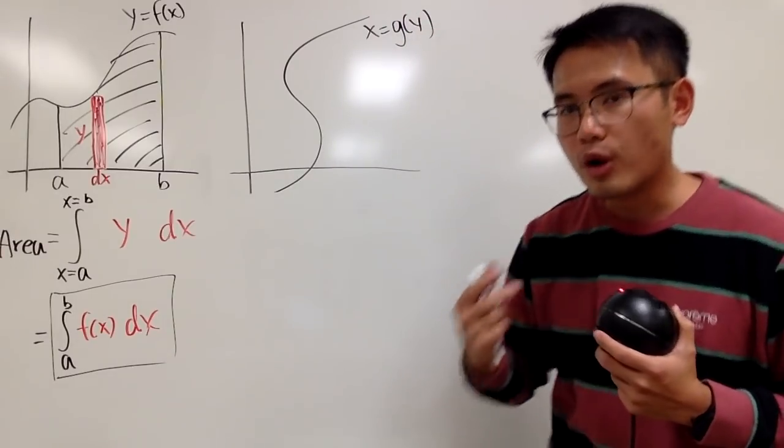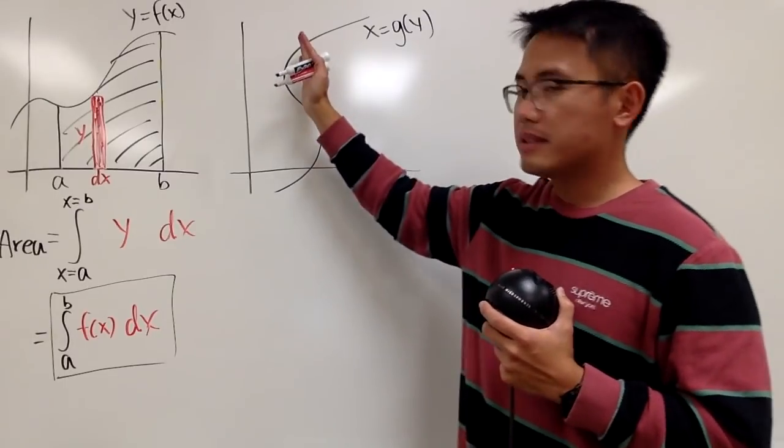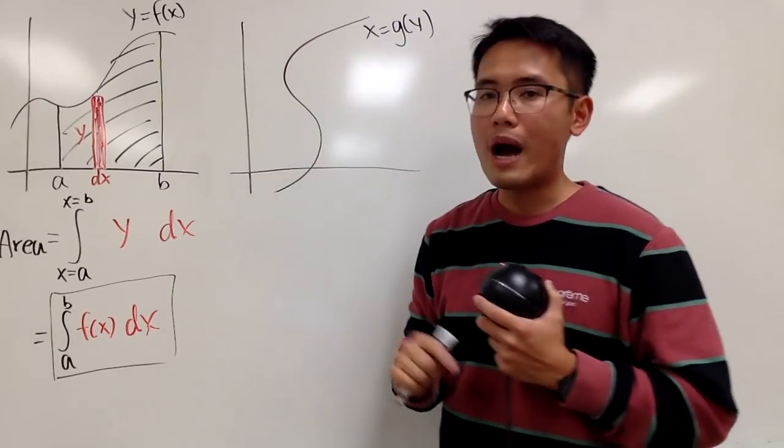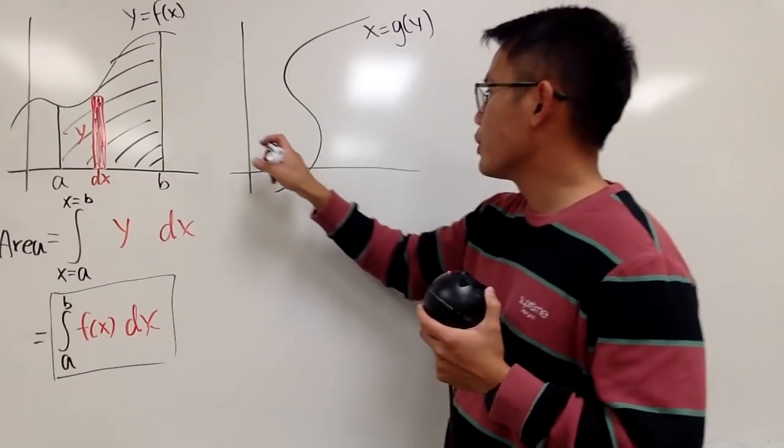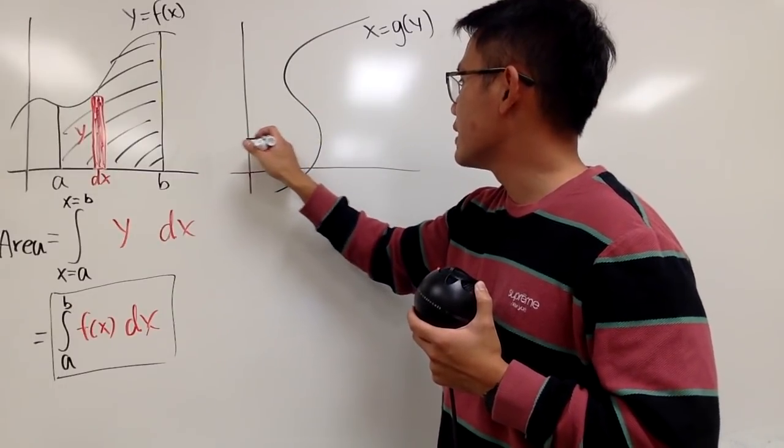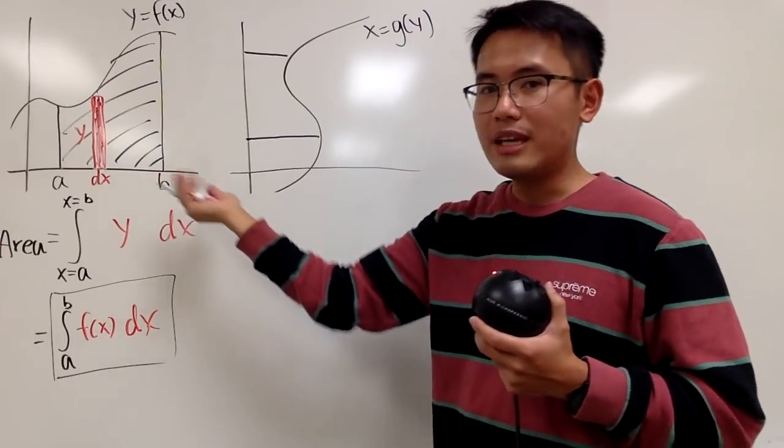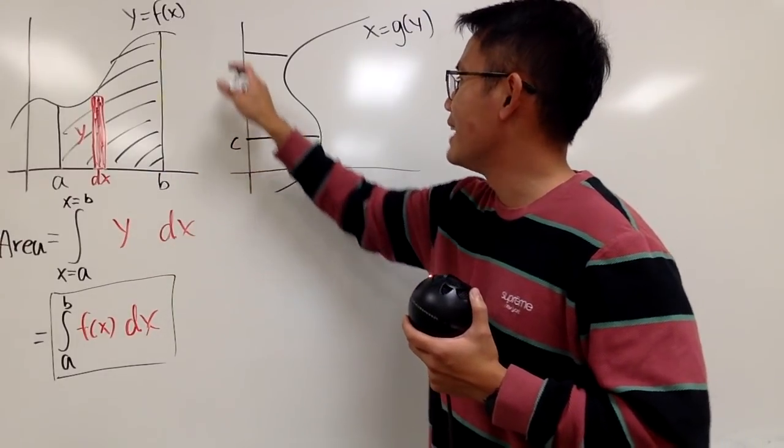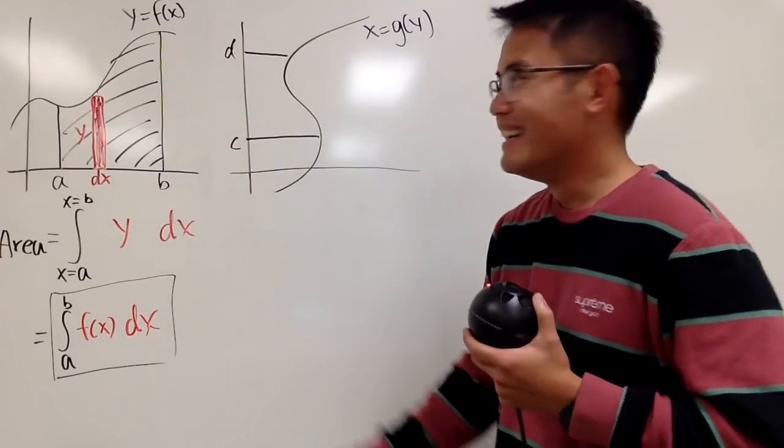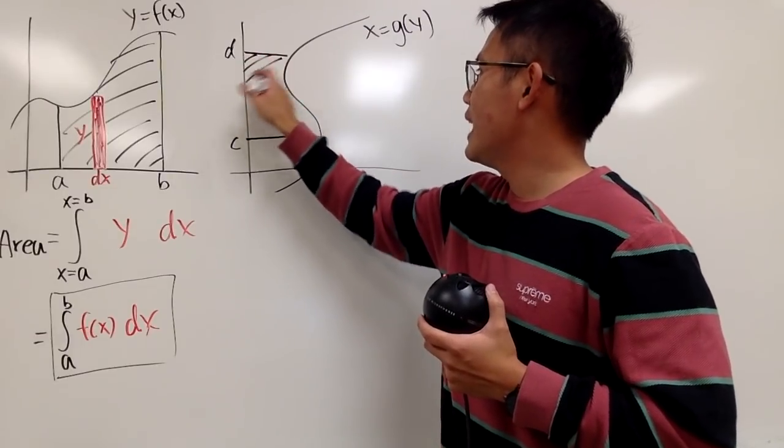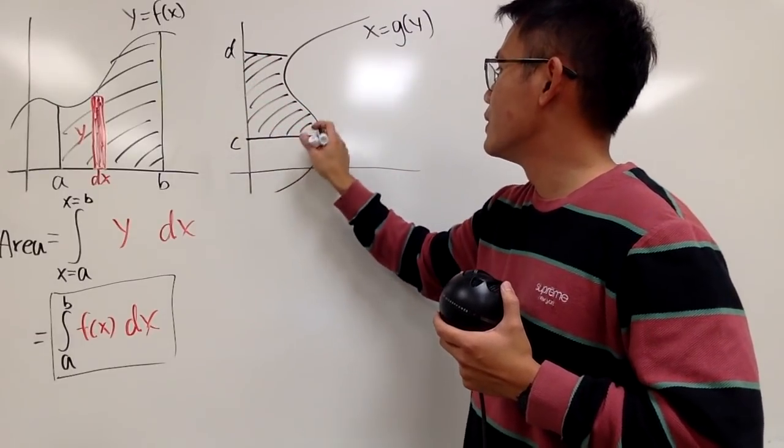And in this situation, we want to talk about the area from this curve to the y-axis. So maybe you want to go from one point to the other, let's say from here up to here. And since I used a and b already, of course, let's use c and d. And I'm just going to find the area of this region now.